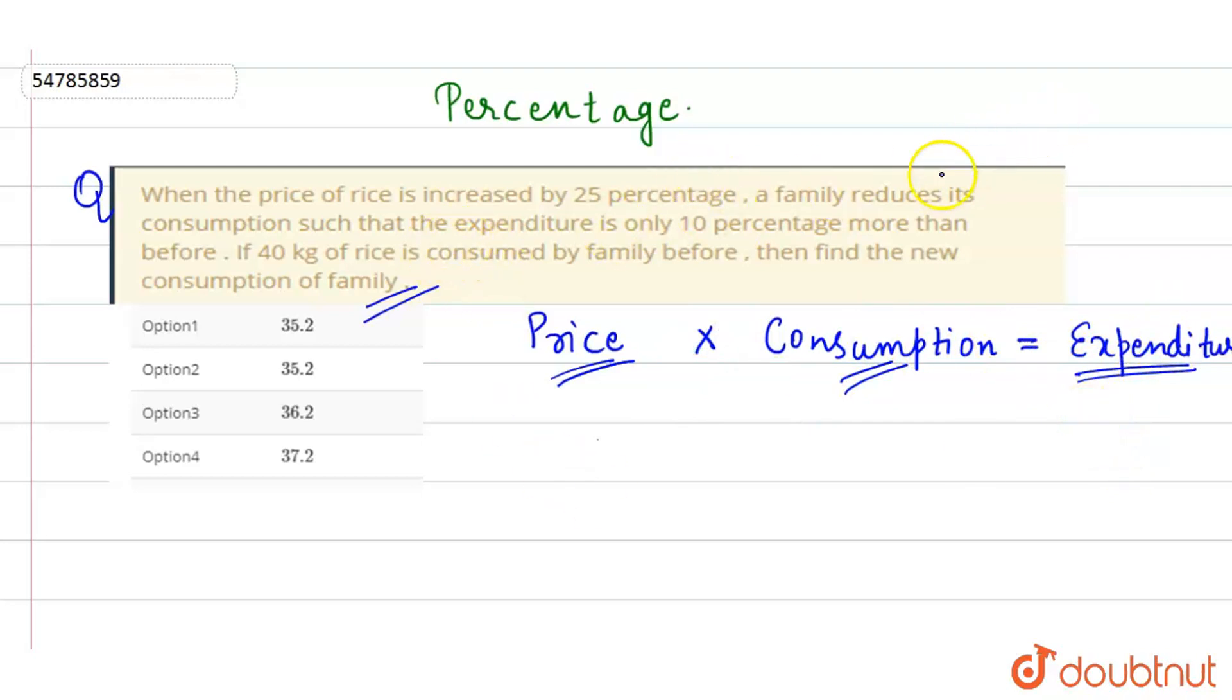See, 25% here - the price of rice is increased by 25%. So 25% can be written as 25 by 100, which is 1 by 4. So first of all, we have to know that the original price was 4.